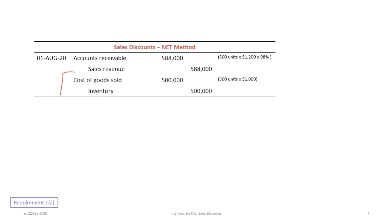Remember that with any product sales journal entry there is always the associated entry to record cost of goods sold and a credit to inventory. The cost on these units is a total of $500,000 — 500 units at a cost of $1,000 each.